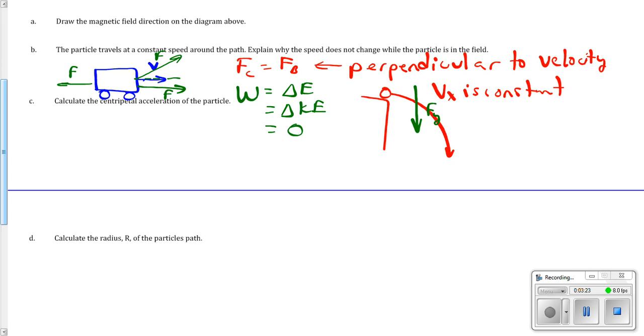Calculate the centripetal acceleration. There's several different ways to calculate centripetal acceleration. The easiest one to try is the definition of centripetal acceleration, V squared over R. You can't do that because you don't know the radius. Plus, later on, you're asked for the radius, so you're probably out. The other way to do that is to solve for F.